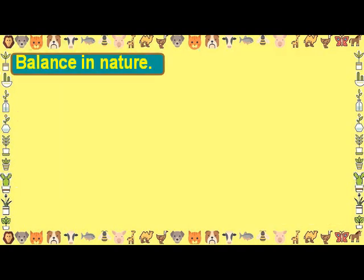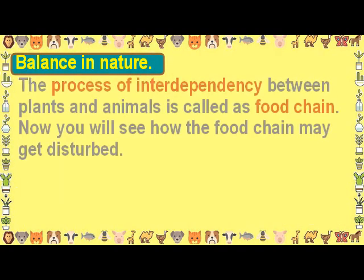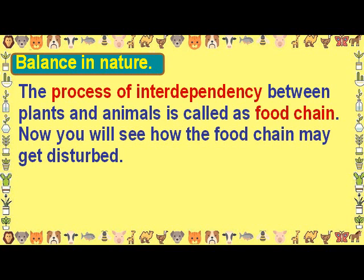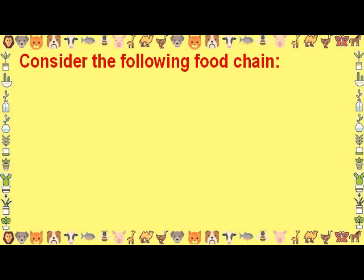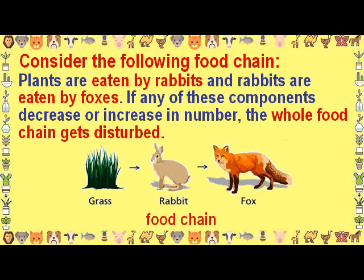Balance in nature: the process of interdependency between plants and animals is called a food chain. Now consider how the food chain may get disturbed. Consider the following food chain: plants are eaten by rabbits, and rabbits are eaten by foxes. If any of these components decreases or increases in number, the whole food chain gets disturbed.